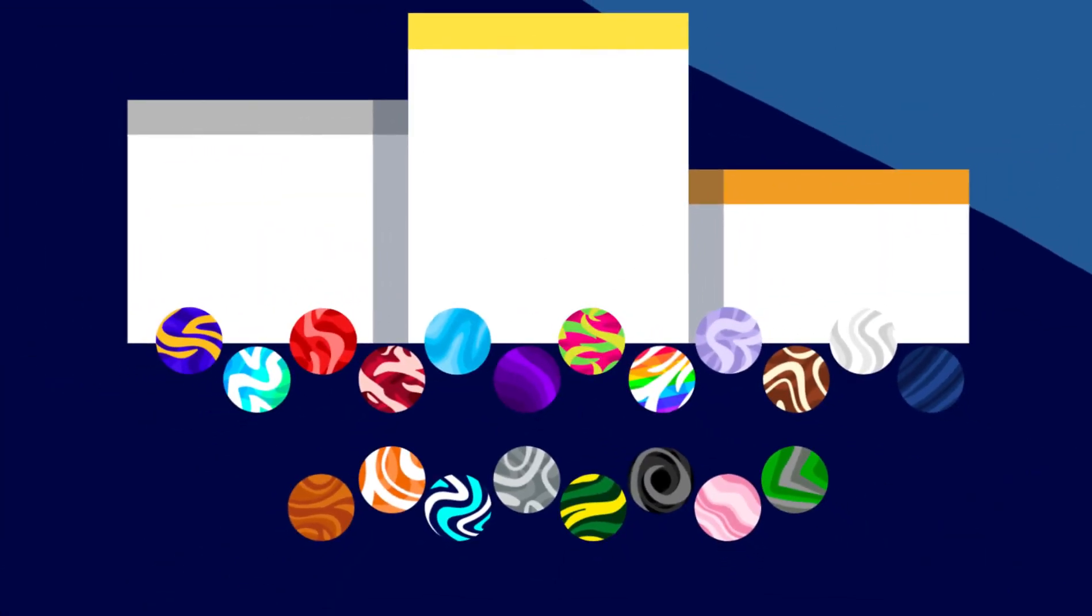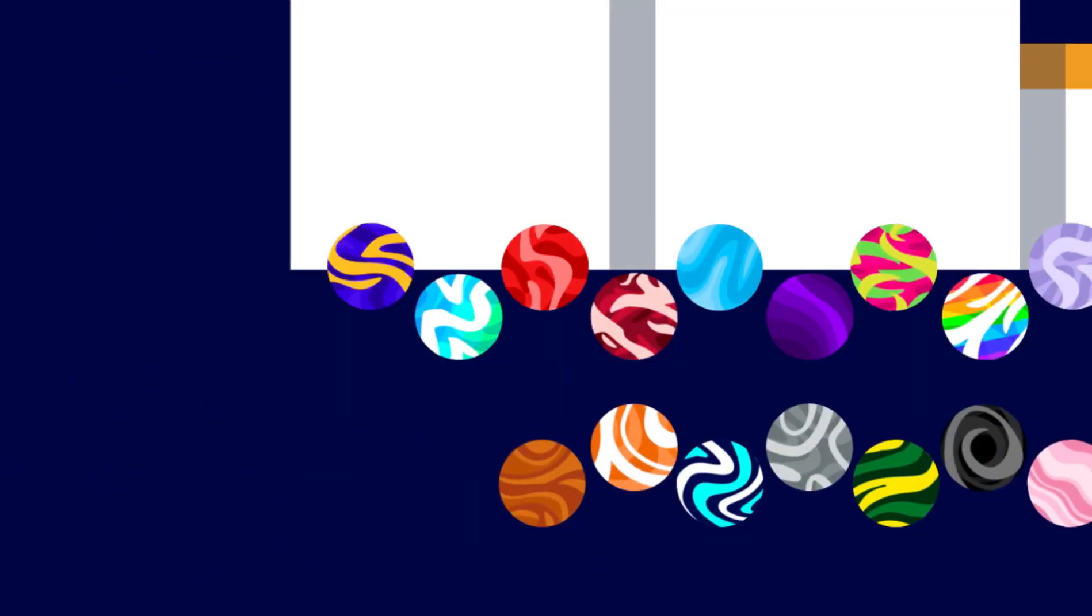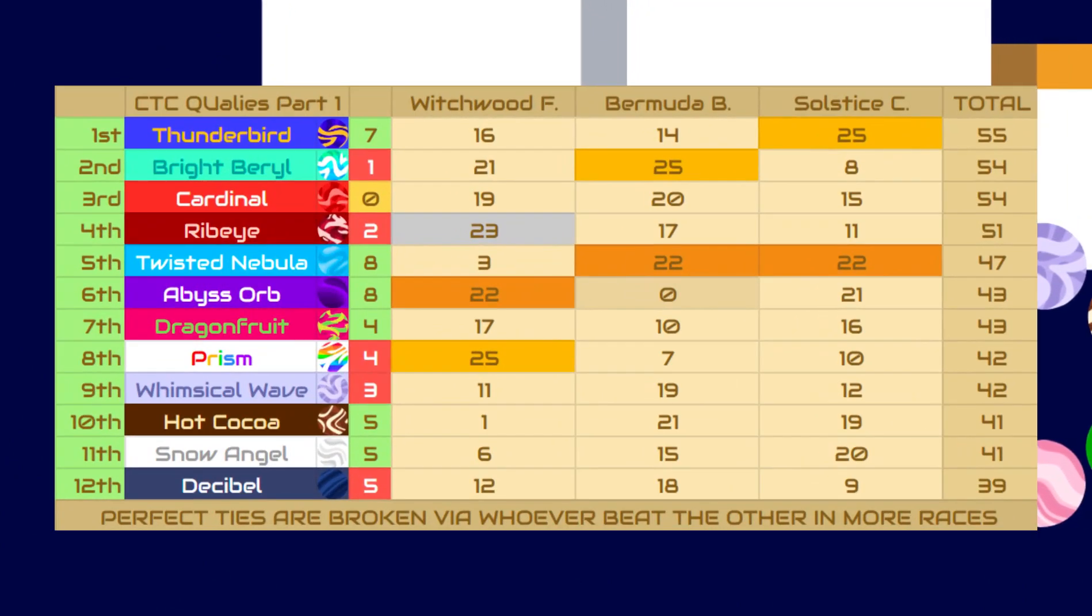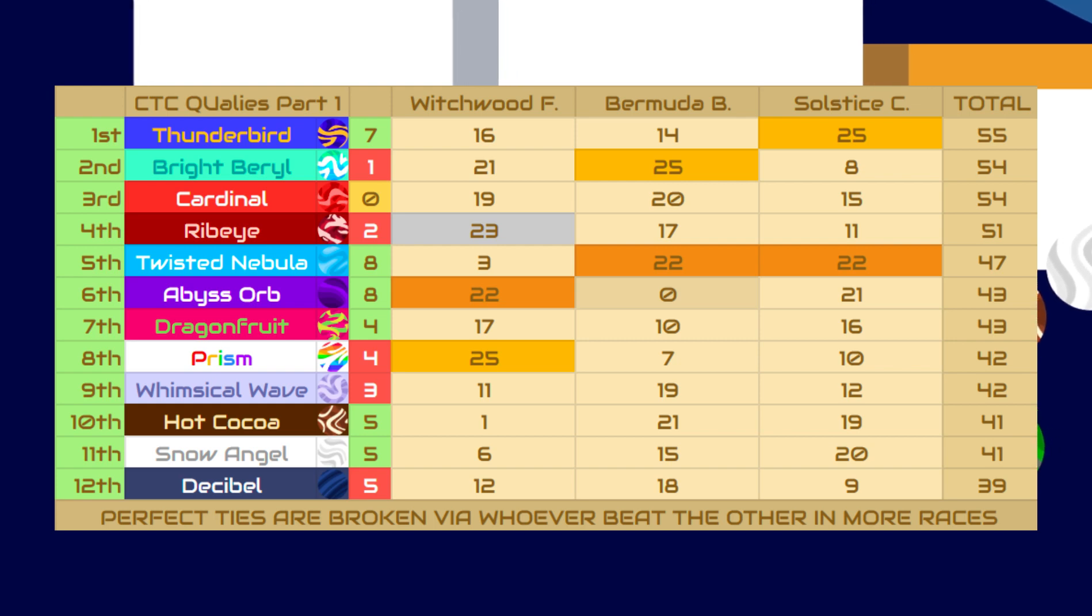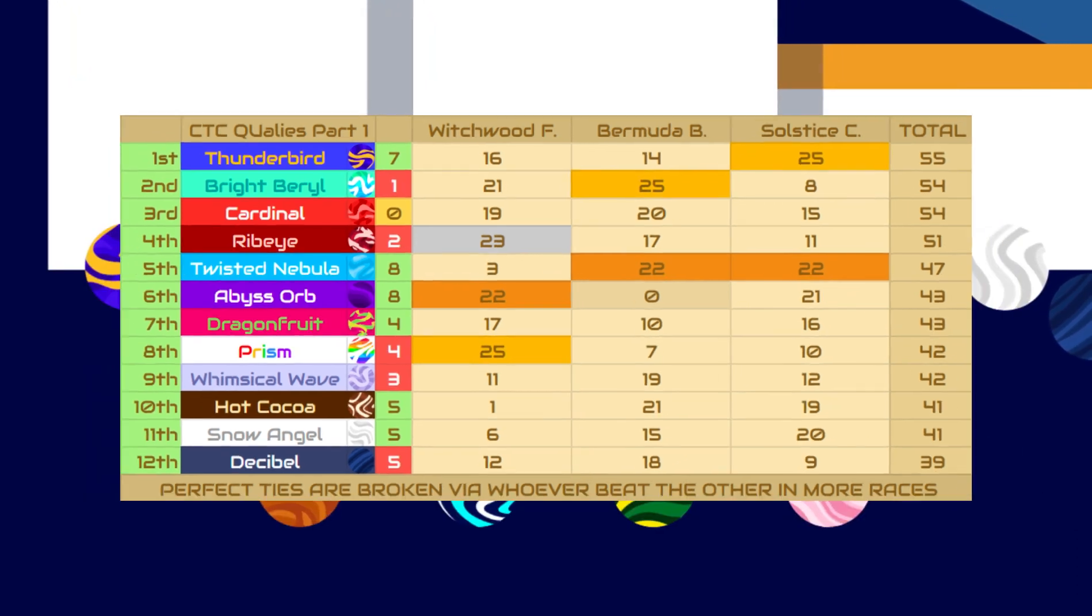Thunderbird, Bright Beryl, Cardinal, Rib Eye, Prism, Nebula, Abyss Orb, Dragon Fruit, Whimsical Wave, Hot Cocoa, Snow Angel, and Decibel. These 12 will be making it out of the qualifiers and going into the A League, joining our eight auto-qualified marbles. Unfortunately, especially for Flower Eye, they lost to a perfect tie against Decibel, and since Decibel beat Flower Eye in more races, they took the last spot.